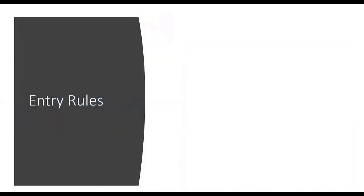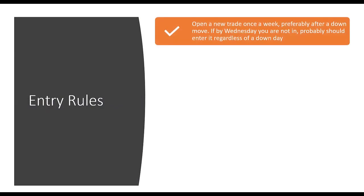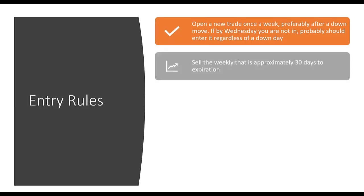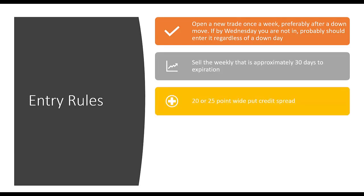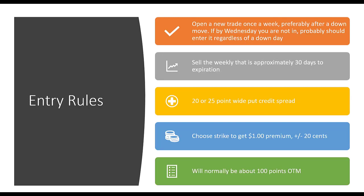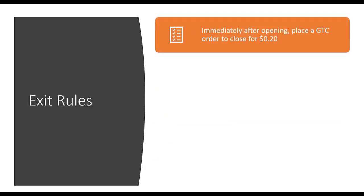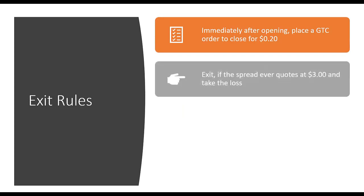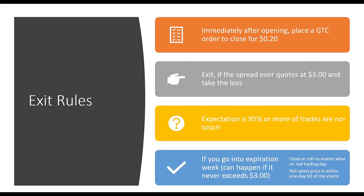The parking trade rules: we want to open the trade once a week, preferably on a down day, and if not, no later than Wednesday. We want to sell spreads with a DTE of about 30 days — specifically 20 or 25 point wide put credit spreads, targeting about $1 of premium each time. We exit when we can buy it back for 20 cents, when it exceeds $3, or on the last trading day.